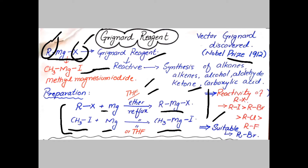This is because the size of the iodide ion is much larger. The reactivity of alkyl iodide is more, but iodide compounds are much more expensive. So the best alkyl halide to use is alkyl bromide, which is easily available, cheap, and exists in liquid form.